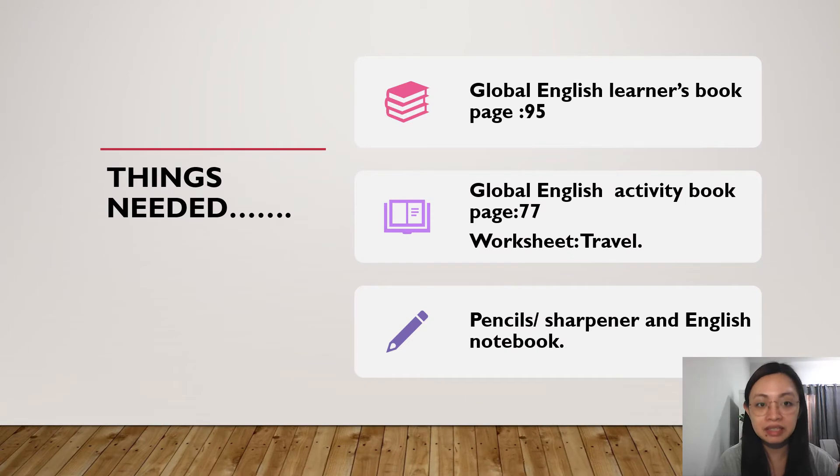Now, what are the things that you need? You need your Global English Learners book on page 95, and your Global English Activity book on page 77. We have also the worksheet travel. Pencils, sharpeners, and English notebook or paper will do.